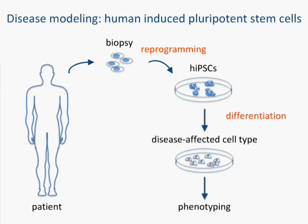Beyond that, the process of reprogramming is fraught with peril. Not only is it difficult to do, it's time-consuming and expensive. In our experience, it can take up to six months and often costs around $15,000 per IPS cell line generated from a patient.